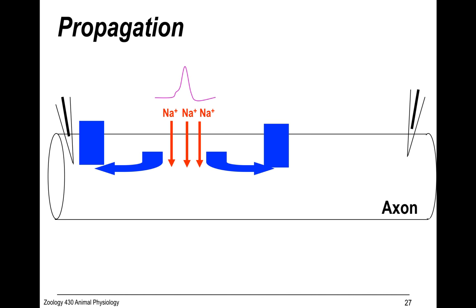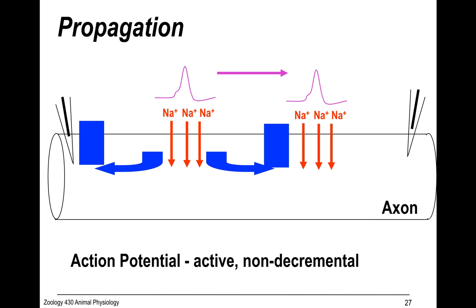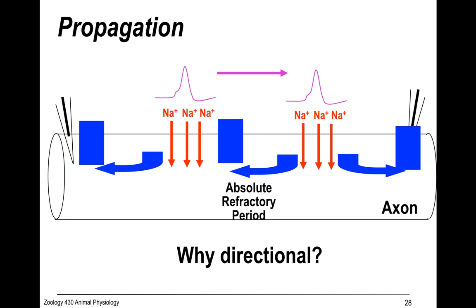If you go above threshold, you'll get an action potential, and those voltage-gated channels will open, which will cause another change in membrane potential and cause the action potential to travel. Action potentials are different from graded potentials because they're active and don't decrease in magnitude — they remain constant. They're directional because of the absolute refractory period: once that membrane potential is used up, it needs time to rebuild those chemical gradients across the membrane.